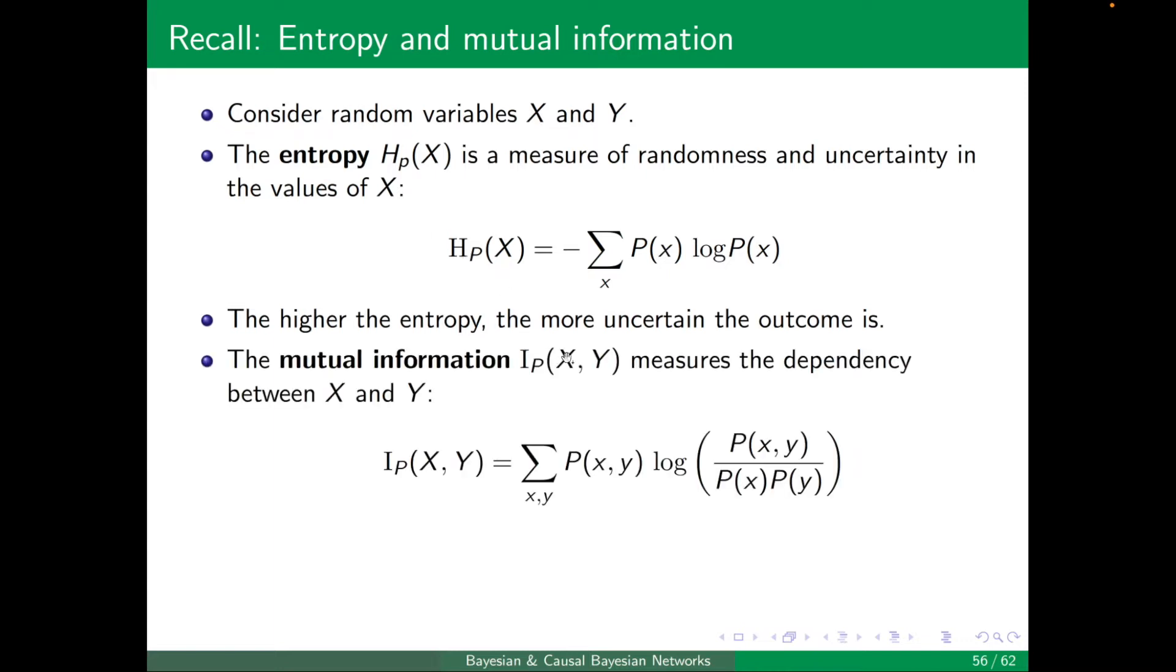The mutual information I_P(X,Y), X and Y, measures the dependency between X and Y. And it's defined as the summation of P(x,y) times log of the joint distribution divided by the marginal distributions. And this is over all possible values of X and Y.